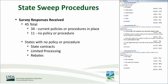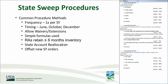FNS, with the help of the active processing committee, surveyed state distributing agencies to determine if they had any state inventory sweep policies or procedures in place. Of 45 states that responded, 34 states have policies or procedures already in place, some recent and not yet implemented, and 11 states have no policy or procedure currently in place. States with no policy were typically those with state-procured contracts where all orders to processors are controlled and monitored at the state level, or those with limited processing participation using rebate methods for value pass-through.